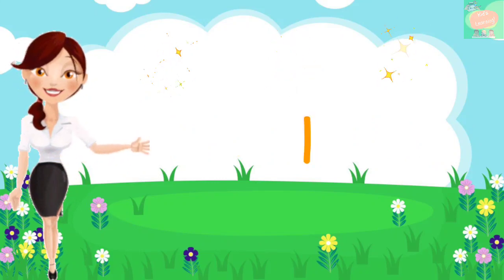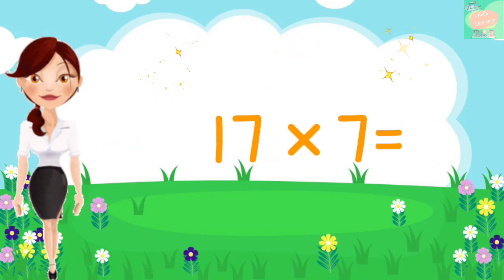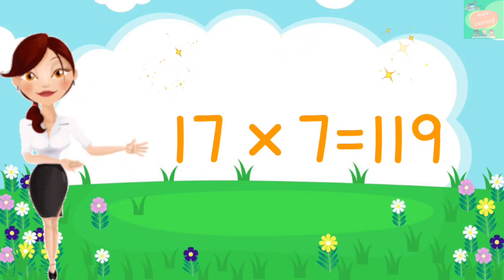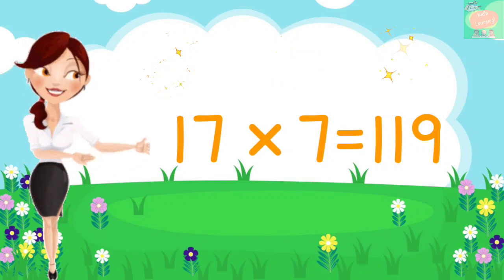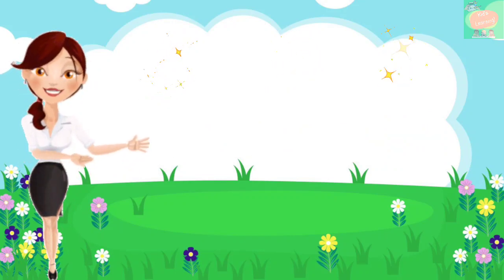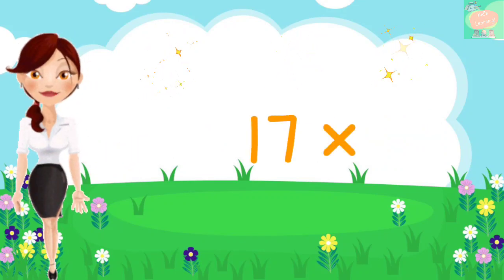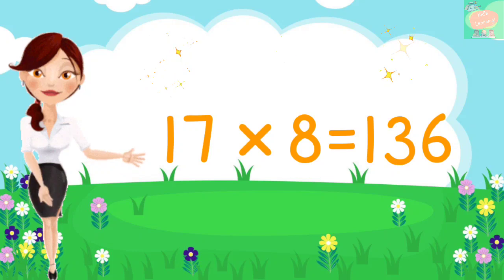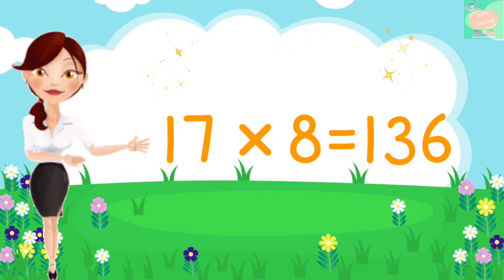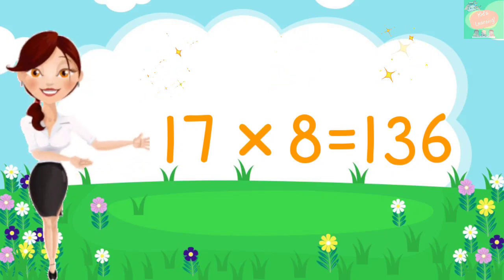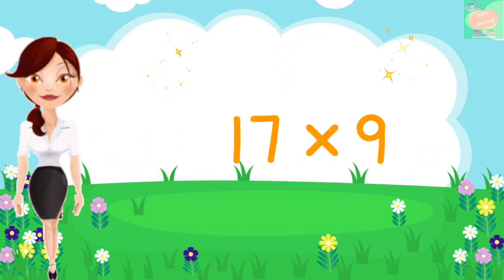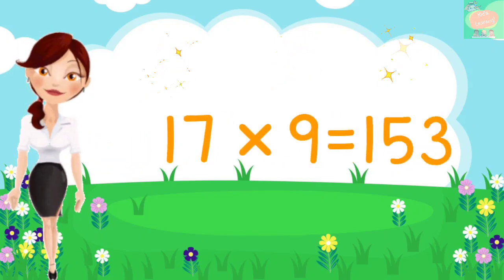17 sevens are 119, 17 eights are 136, 17 nines are 153.